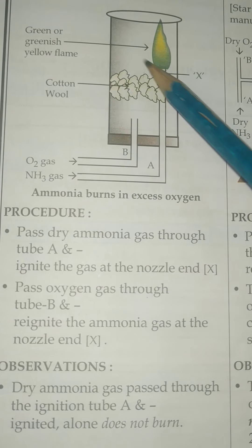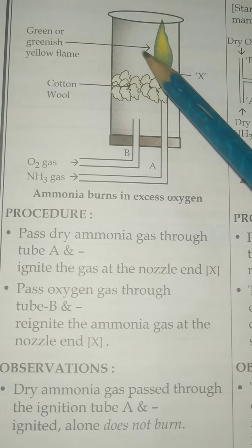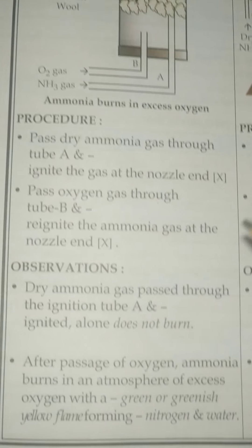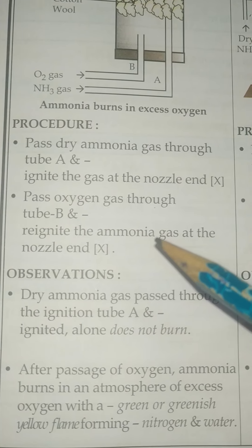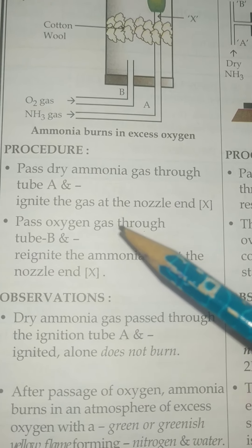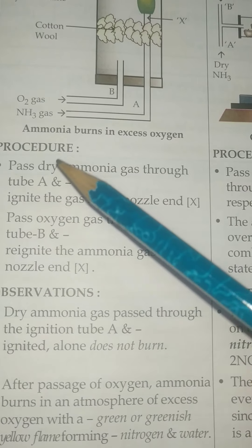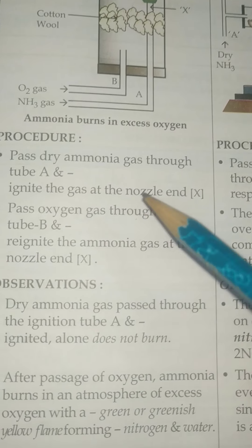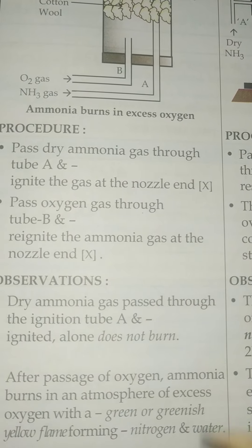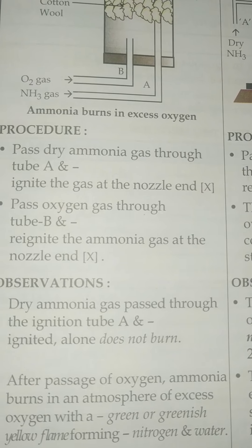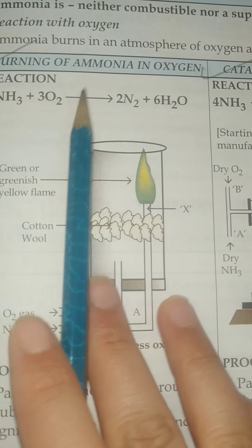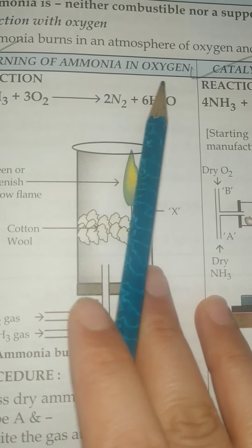In the presence of oxygen, ammonia burns with a green or greenish-yellow flame. Ammonia reacts with oxygen to give nitrogen and water. This is the burning of ammonia in oxygen.